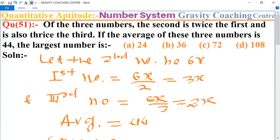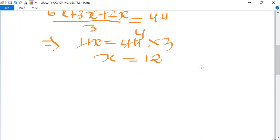x equals 12. So to find the largest number, here the largest number is 6x. Therefore, largest number equals 6x equals 6 into 12...